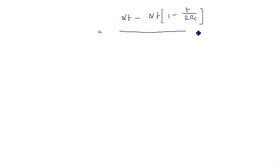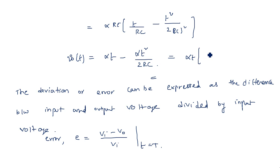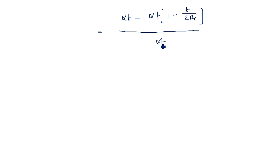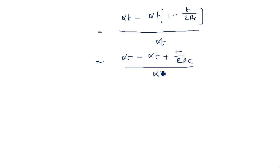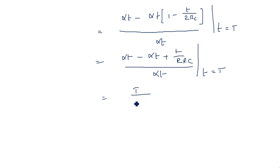Taking αT as common: E = [αT − αT·(1 − T/(2RC))] / αT. The αT terms cancel, leaving E = T / (2RC), evaluated at t = T.